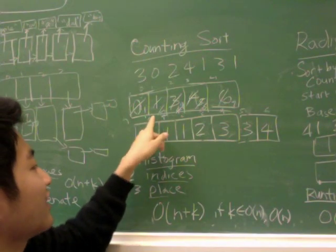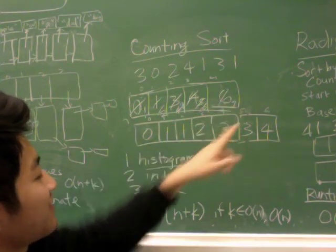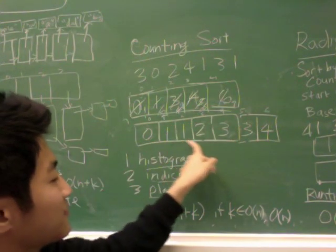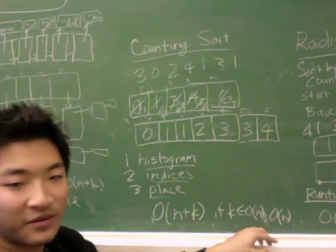And this becomes a three. So your new counter is one, two, four, six, seven. And your output is zero, one, one, two, three, three, four. It's all sorted and very pretty.